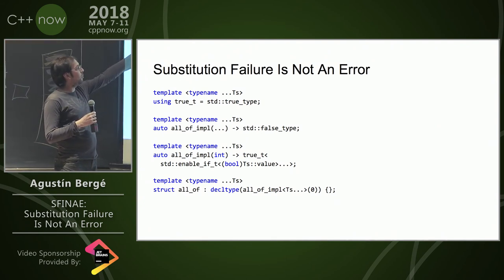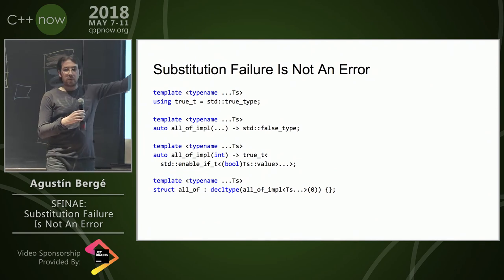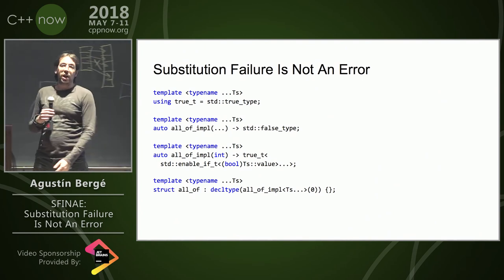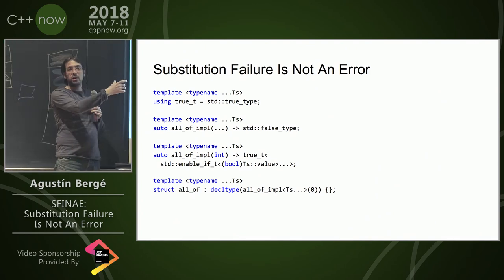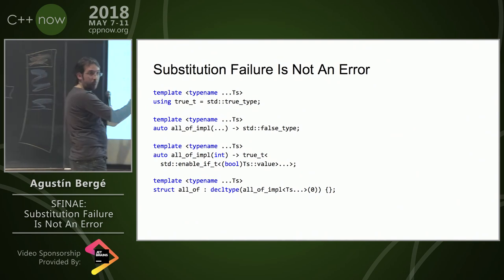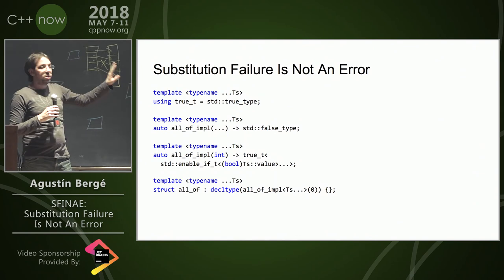And what it does is, it takes the pack of predicates, and it expands them into a sequence of SFINAE checks. So what's going to happen is that during substitution, these SFINAE checks are going to be checked in lexical order, one at a time. And as soon as one of those is false, substitution is going to stop.